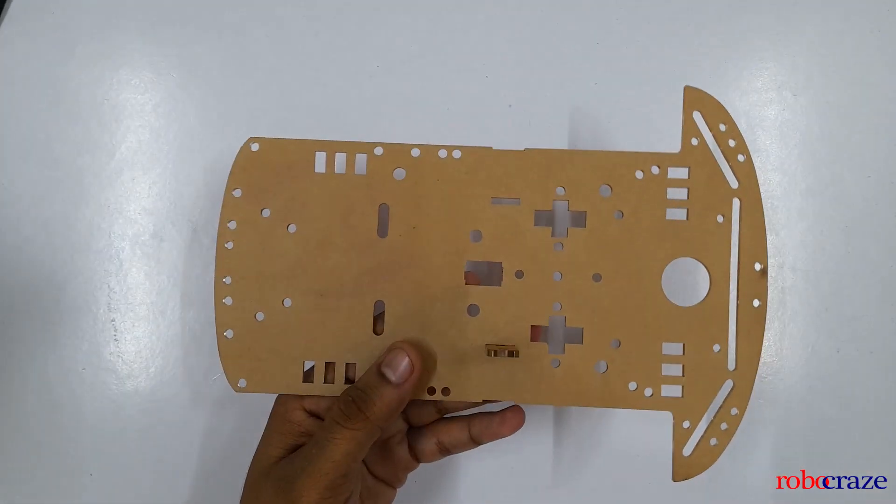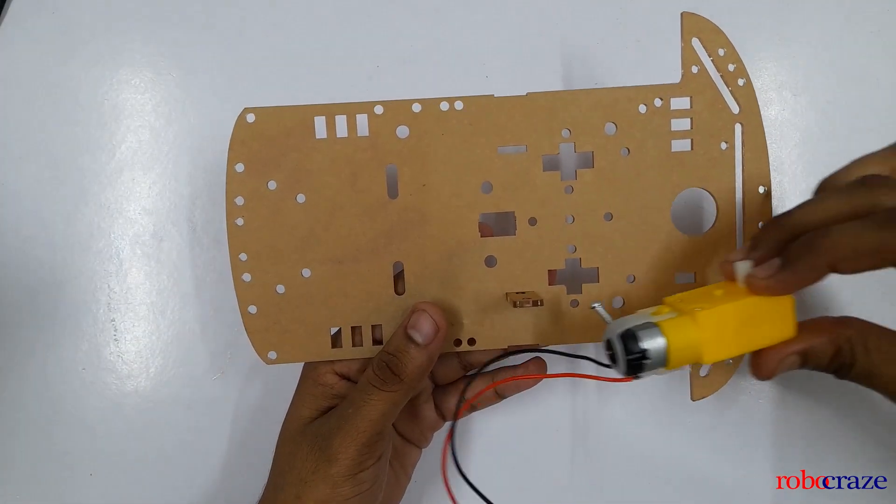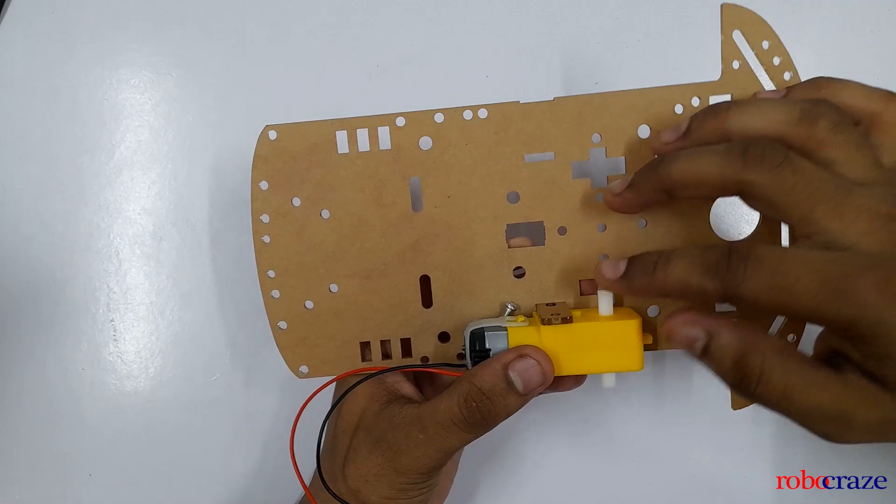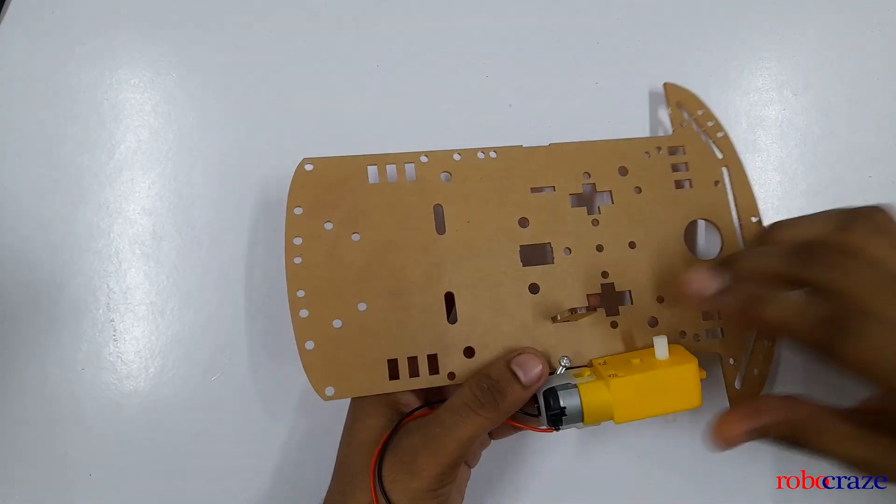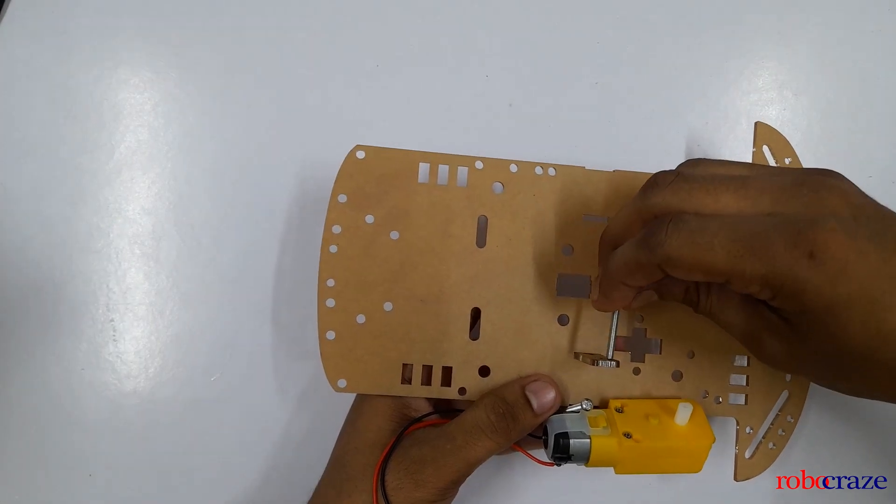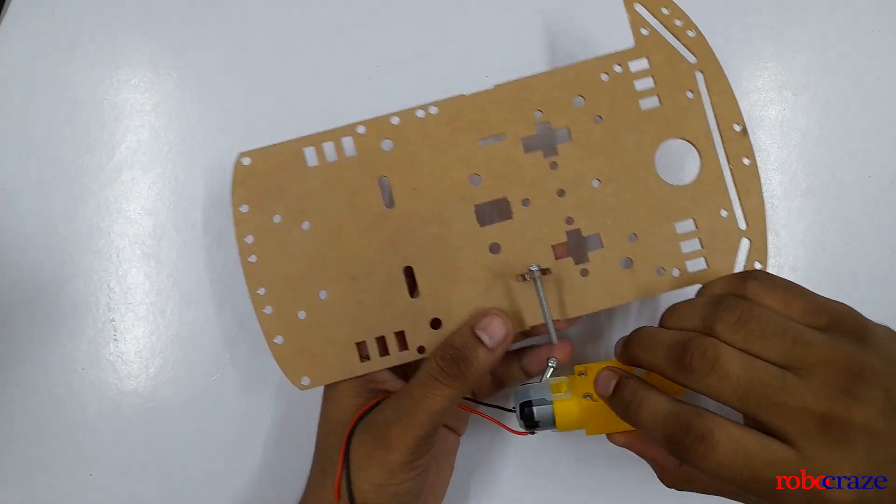Mount your DC motor. Be careful while mounting the DC motor. It should come these wheels should come in the opposite direction of your universal wheel. Use the screw to mount the DC motor on.